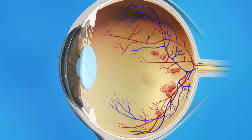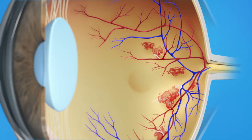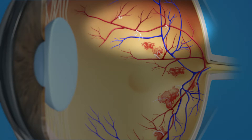Proliferative diabetic retinopathy, or PDR, is a stage of diabetic eye disease where abnormal blood vessels begin to grow on the surface of the retina. This is called neovascularization. With PDR, many blood vessels in the retina close off, keeping blood from flowing properly to the retina. The retina responds to this problem by trying to grow new blood vessels. However, these new abnormal vessels do not provide proper blood flow.